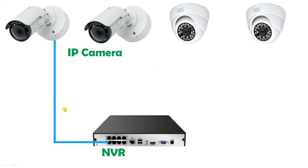For now I used ethernet cable here for the connection. The way we did the connection of one IP camera with the NVR, similarly we will do the connection of the other IP cameras with the NVR. Cable from this camera will be connected here, cable of this camera will be connected here, and similarly we will connect this camera with the corresponding port.